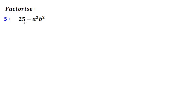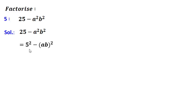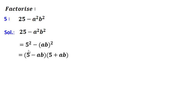Fifth question is 25 minus a squared b squared. Here, 25 is the square of 5 and a squared b squared is the square of ab. Using the formula of a squared minus b squared, it is (5 - ab) into (5 + ab).